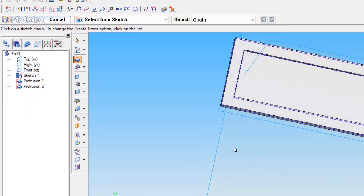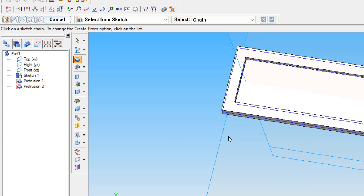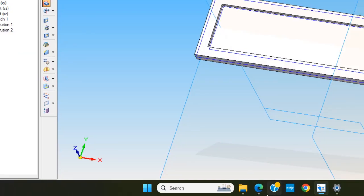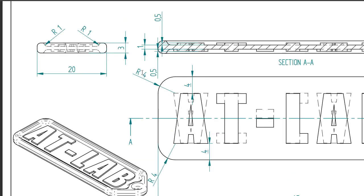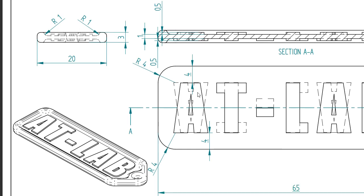Now we are left with the keychain shape and the text we didn't add yet. Before making the sketch, we want to make the fillets at every corner. The outside corners are R4. Since we made a 3mm rib, the inside corners will come around R1. So we are making the inside R1 fillets first, and outside everywhere R4.